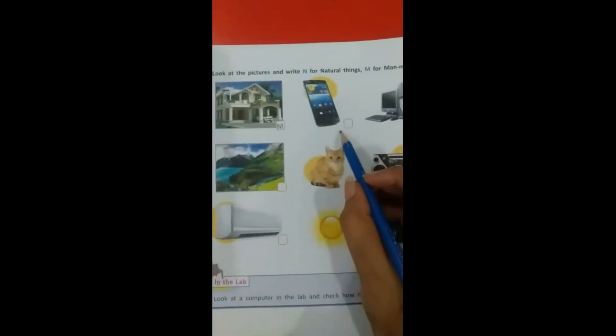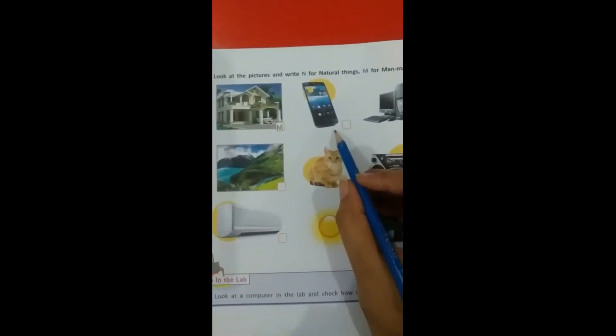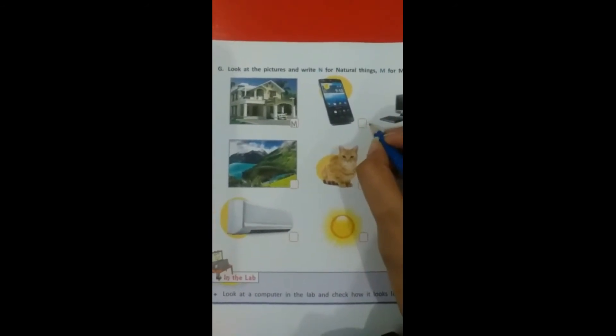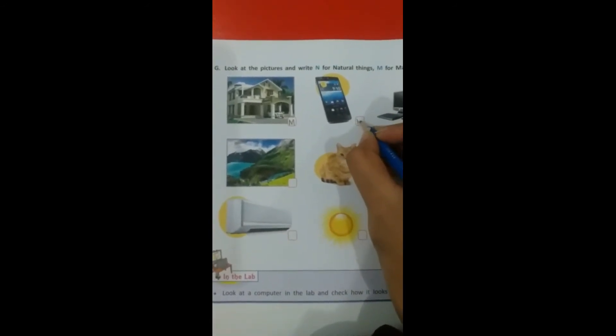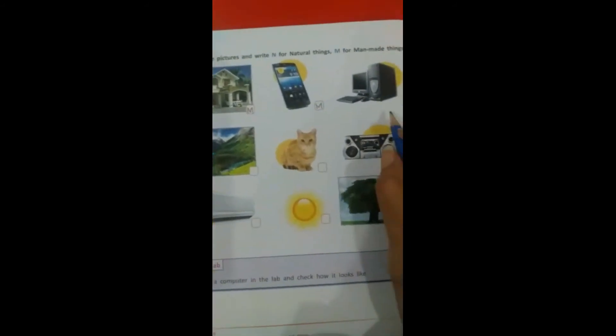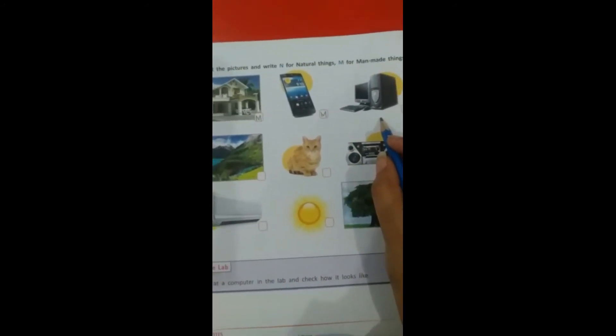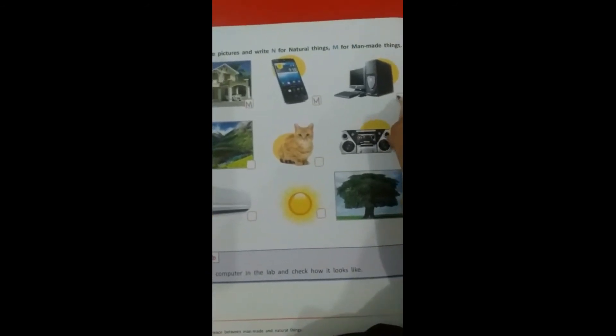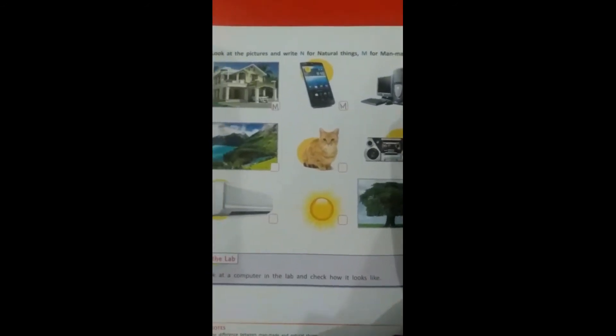The second picture is mobile. Mobile is made by man. It is a man-made thing, so we write M.